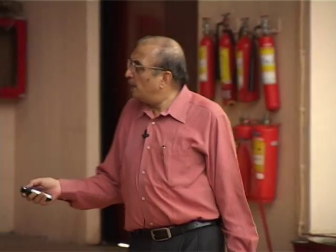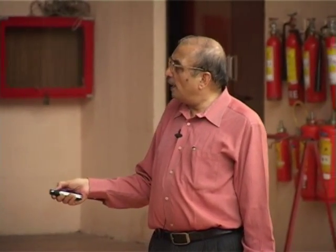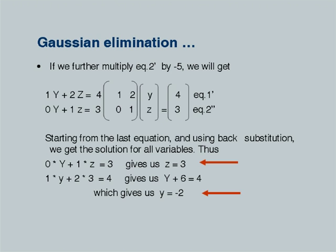We can now get the values of z and y by back substitution. Equation 2-dash directly gives z equals 3. Substituting z equals 3 into the first equation: y plus 2 times 3 equals 4, giving y plus 6 equals 4, so y equals minus 2.